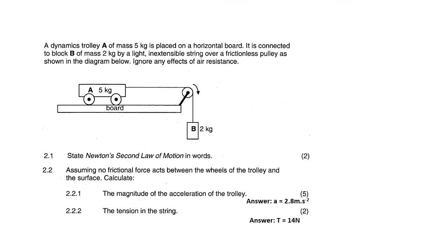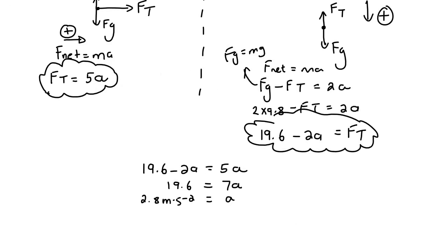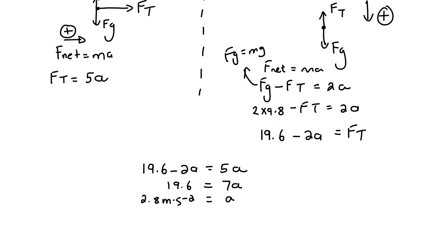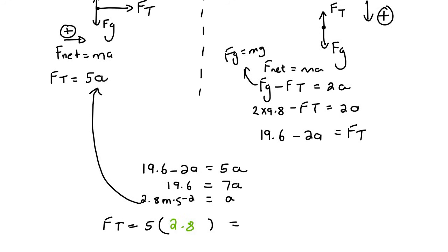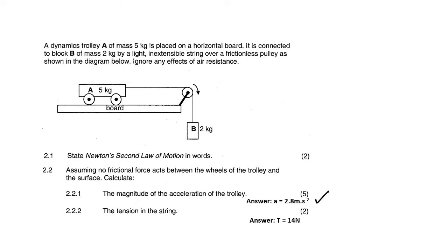So we've done question 2.2.1 and got the acceleration. Now we just need to get the tension in the string. We've calculated the acceleration, so to find the tension you can just plug it into either equation — you'll get the exact same answer. I'll plug it into the first one: FT equals 5 multiplied by 2.8, which gives us 14 newtons. We have now completed both parts of this question.